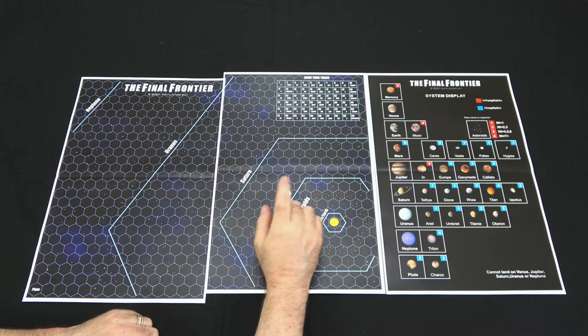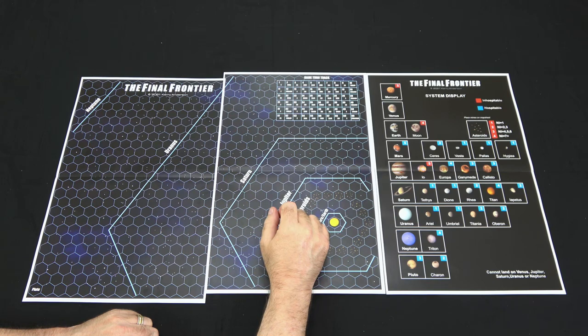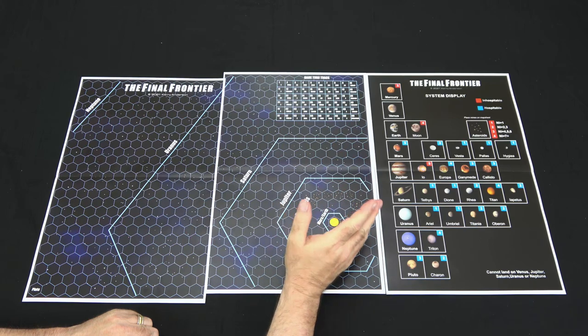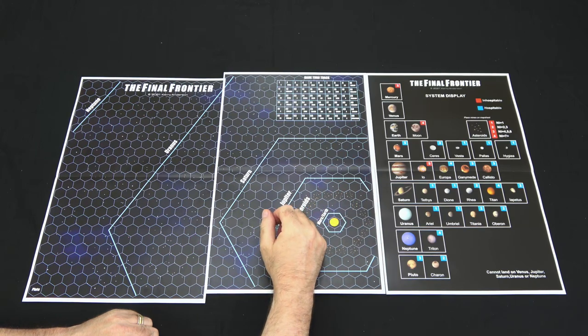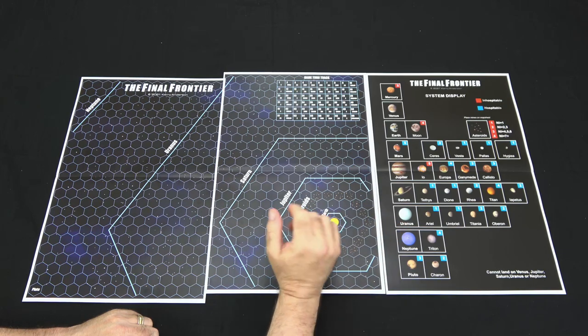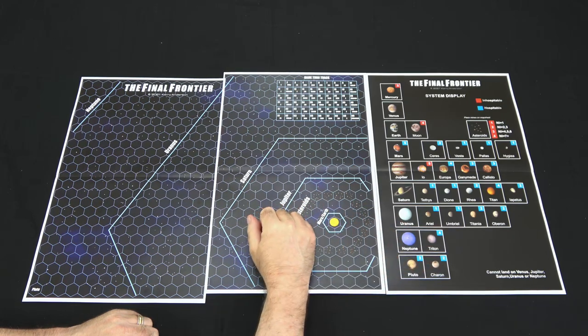You have the game turn track at the top, and over here on the system display are all the planets, as well as any of the minor bodies you can land on. It'll tell you whether it's inhospitable, hospitable, and what the resources are on the planet. You cannot land on Venus, Jupiter, Saturn, Uranus, or Neptune, as it says at the bottom of the system display.